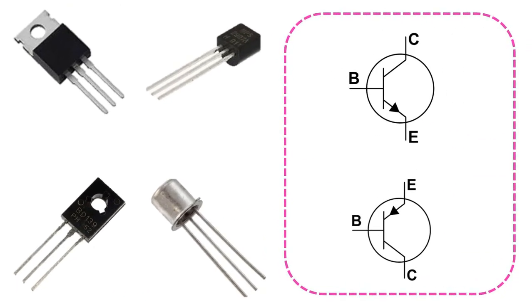These symbols are also used for BJT transistors, which are the most important circuit element of electronics and serve as switching and amplification. The NPN above is the symbol of the PNP transistor below.